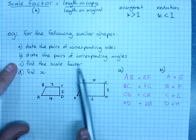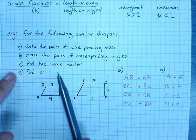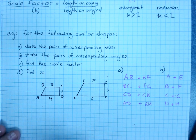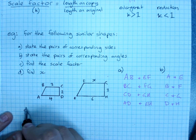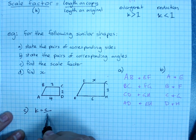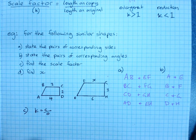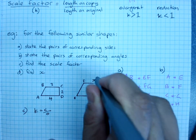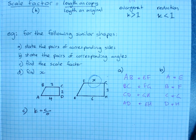So, A and B, find the scale factor. Now, we don't know which one's the copy, and I know that my scale factor, K, needs to be copy over original. Here's the trick. The shape with X on it is the copy.